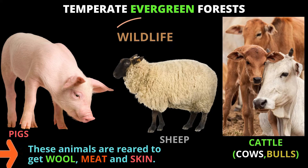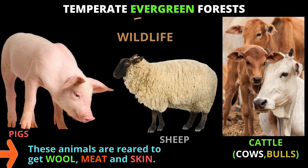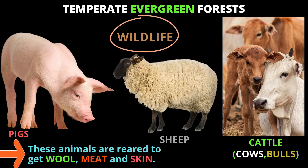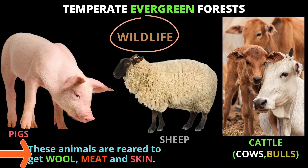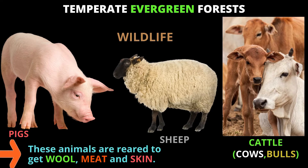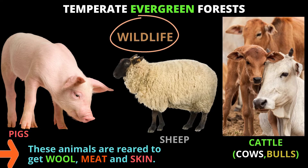What kind of animals can we find in the temperate evergreen forests? Look at this — you can find pigs, sheep, cattle, cows, and bulls. These animals are reared to get wool, meat, and skin.